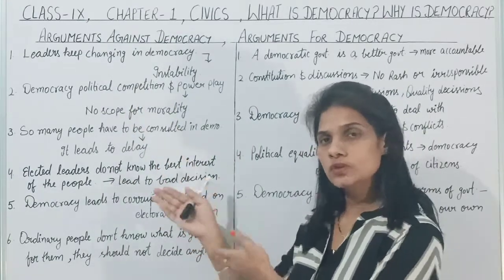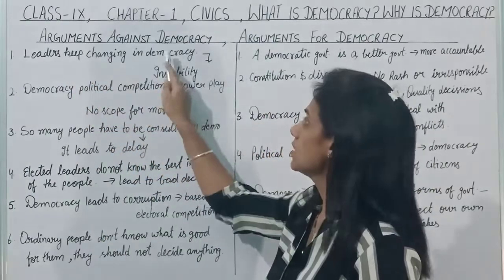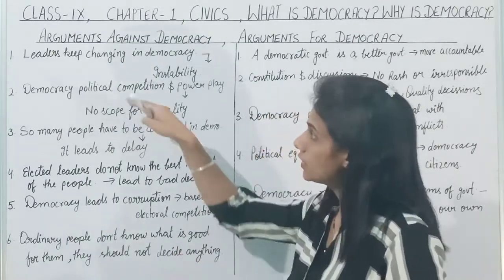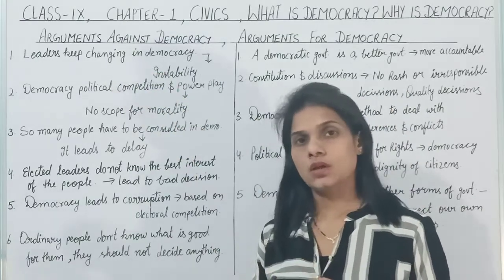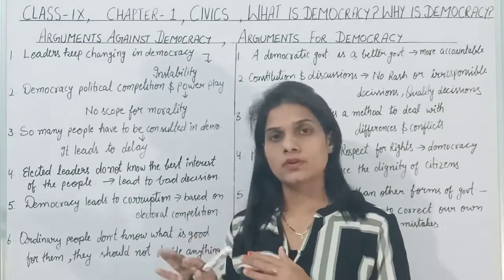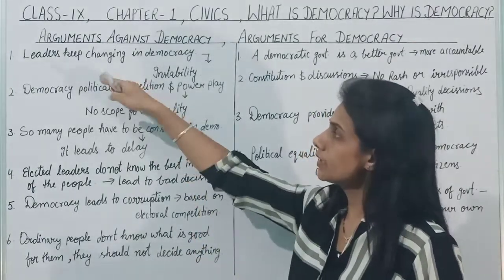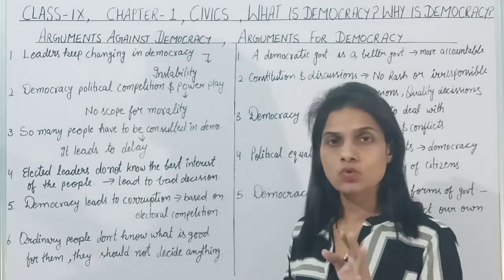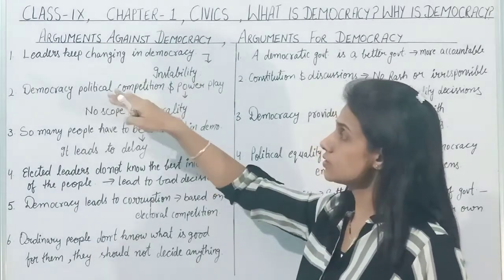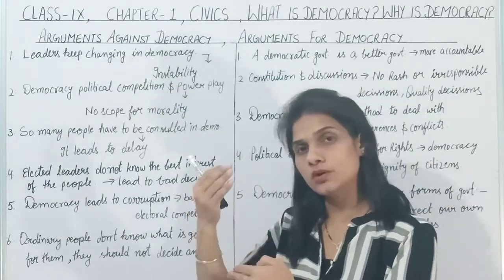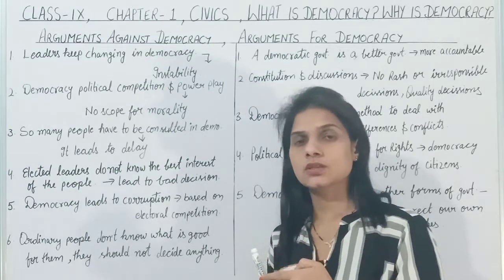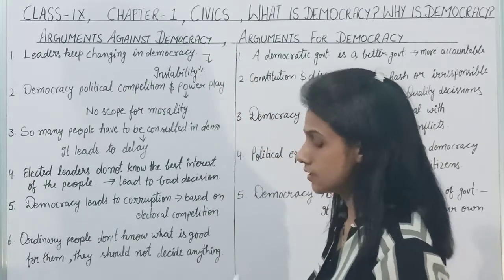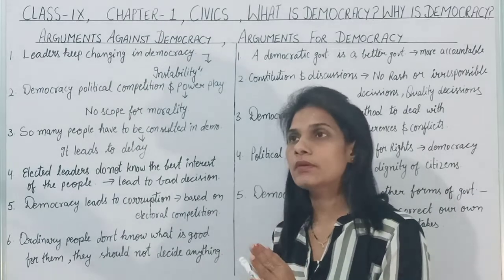Step by step, the first demerit or limitation of democracy is that leaders keep changing. In democracy we have elections after some duration of time — mainly 5 years, taking our country as an example. After elections are held, everyone gets a chance to win. Leaders change after elections; when they change, it leads to instability.